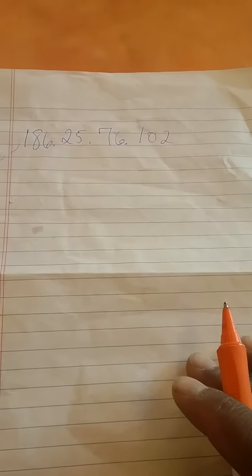I'm going to entitle this video IP addresses and subnet masks and the usable list of IP addresses given a particular subnet mask. So I'm going to make up a class B address of 186.25.76.102. That is the IP address. I'm going to give a subnet mask of slash 26.